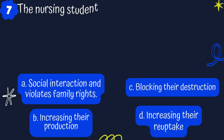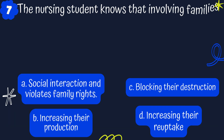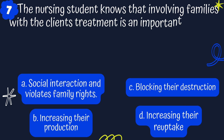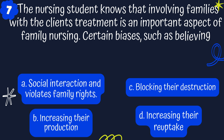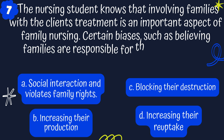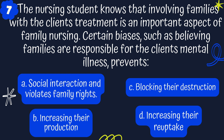Question 7. The nursing student knows that involving families with clients' treatment is an important aspect of family nursing. Certain biases, such as believing families are responsible for the client's mental health, prevents what? Is it A. Social interaction and violates family rights? B. Increases their production? C. Unblocking their destruction? Or is it D. Increasing their reuptake?